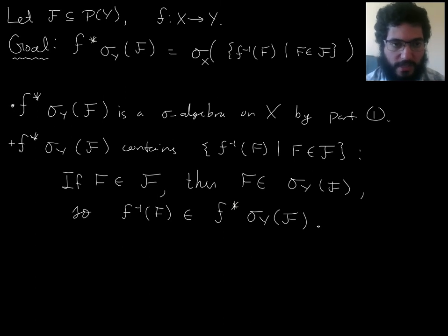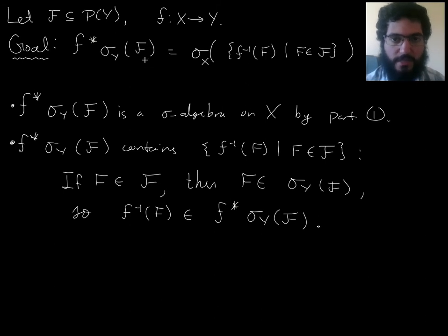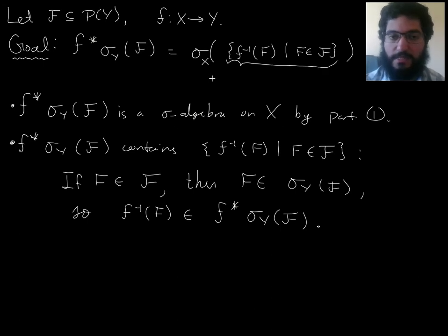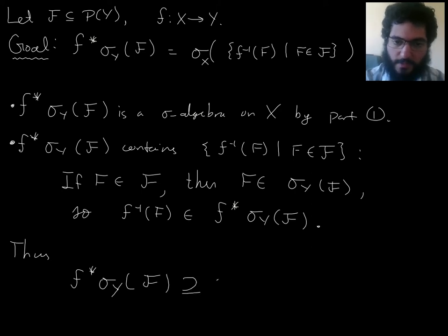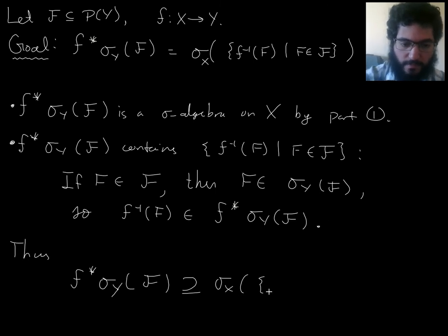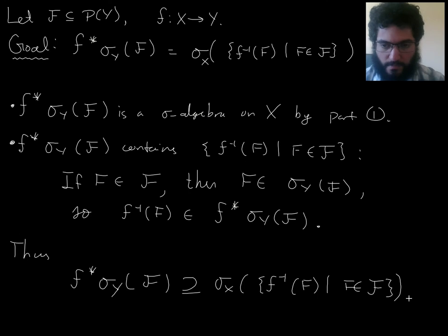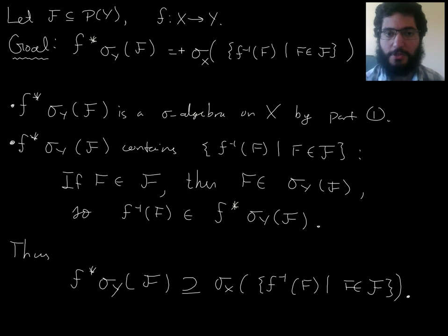So these two points tell us that the left-hand side of our goal is a sigma algebra on x that contains this set. Therefore it contains the smallest such thing. It contains the smallest one. So that's one of the two inclusions we need to prove this equality.